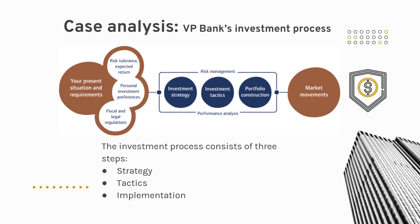The investment process at VP Bank consists of three steps: strategy — the starting point is the definition of long-term strategic investment allocation, determined on the basis of the client's risk profile; tactics — in the second step, VP Bank adjusts the long-term strategic weightings based on current market assessments; and implementation — the third step involves the actual portfolio construction, specifically the selection of financial instruments based on tactical market assessment, enabling optimal and consistent implementation.